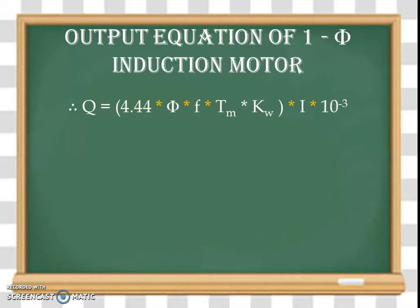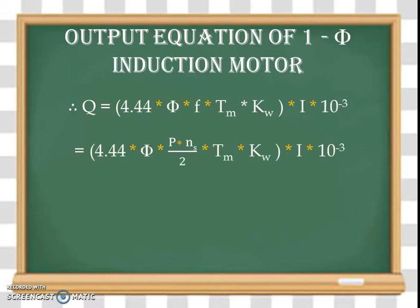Now let us substitute the value of frequency F into this equation. Our equation becomes: Q = 4.44 × φ × (P/2) × Ns × Tm × Kw × I × 10⁻³, where φ is the flux per pole in Weber.